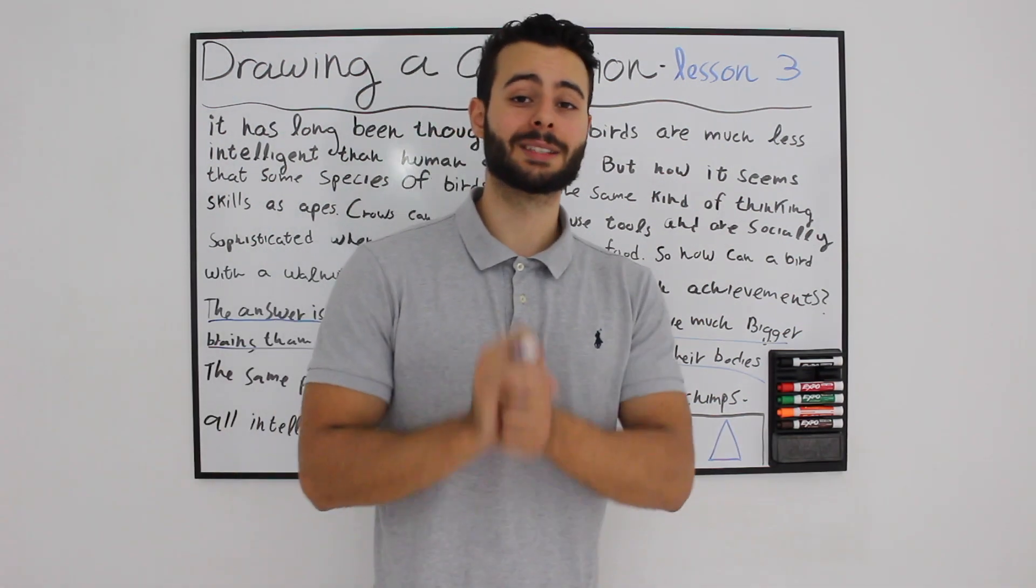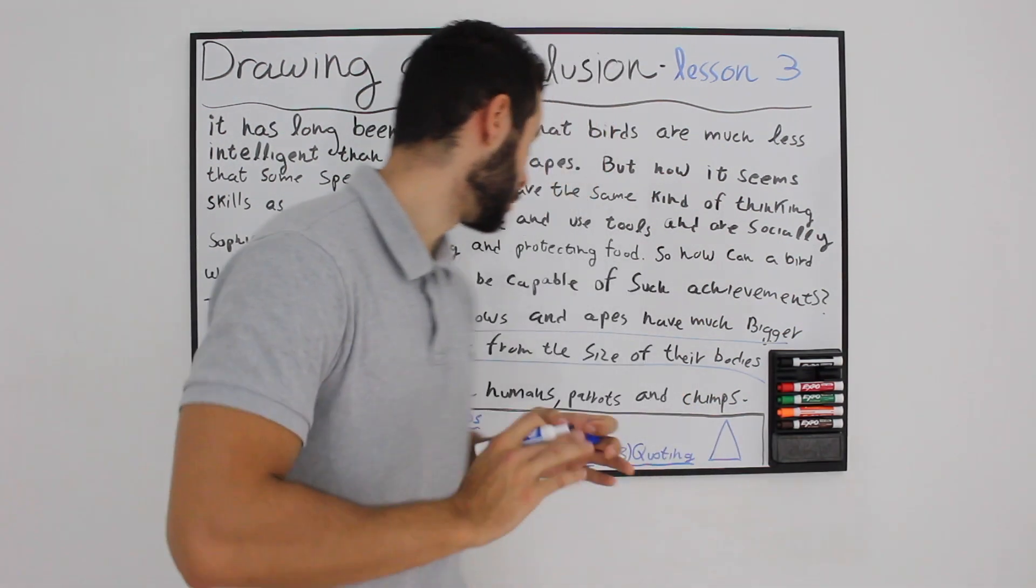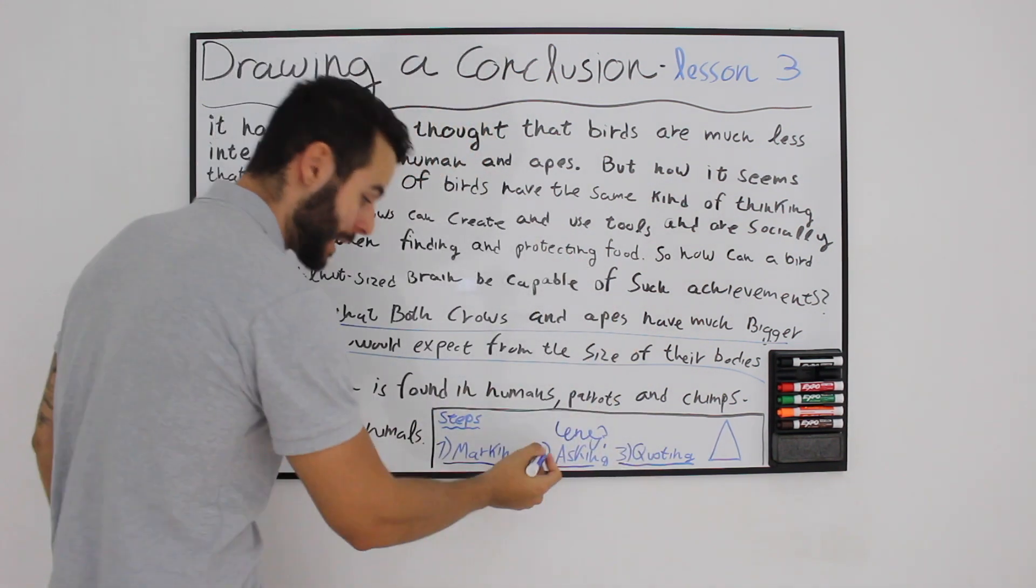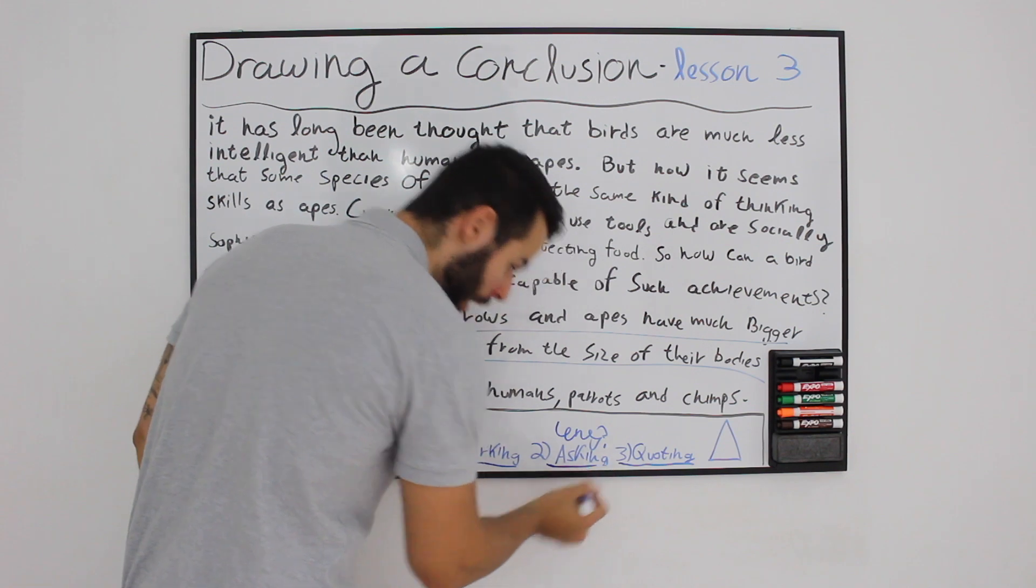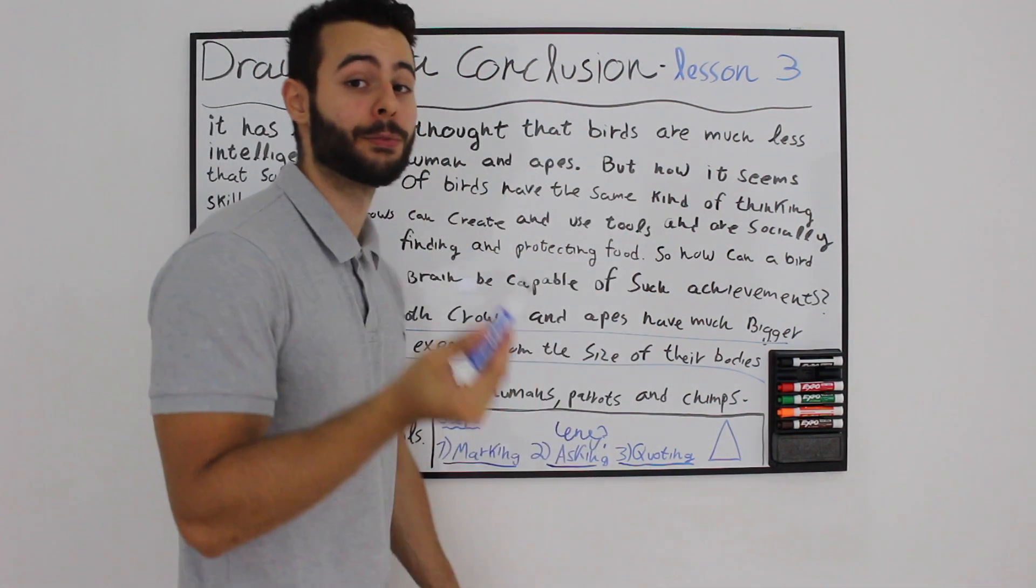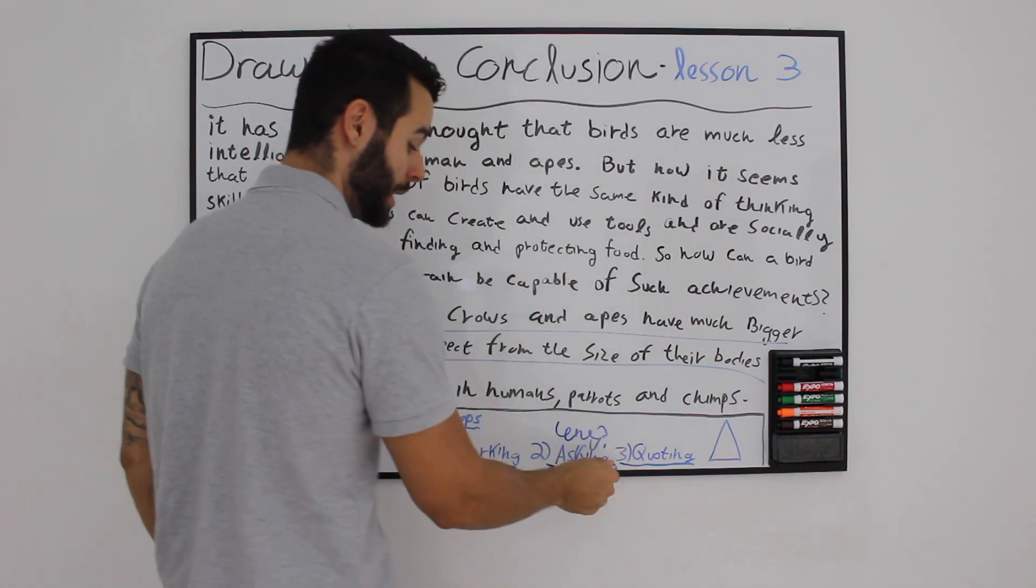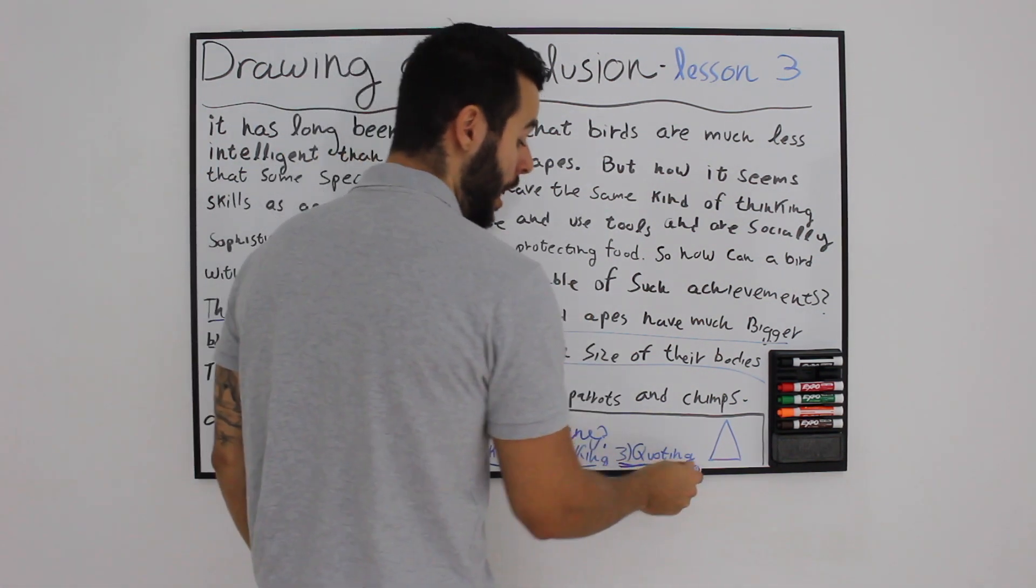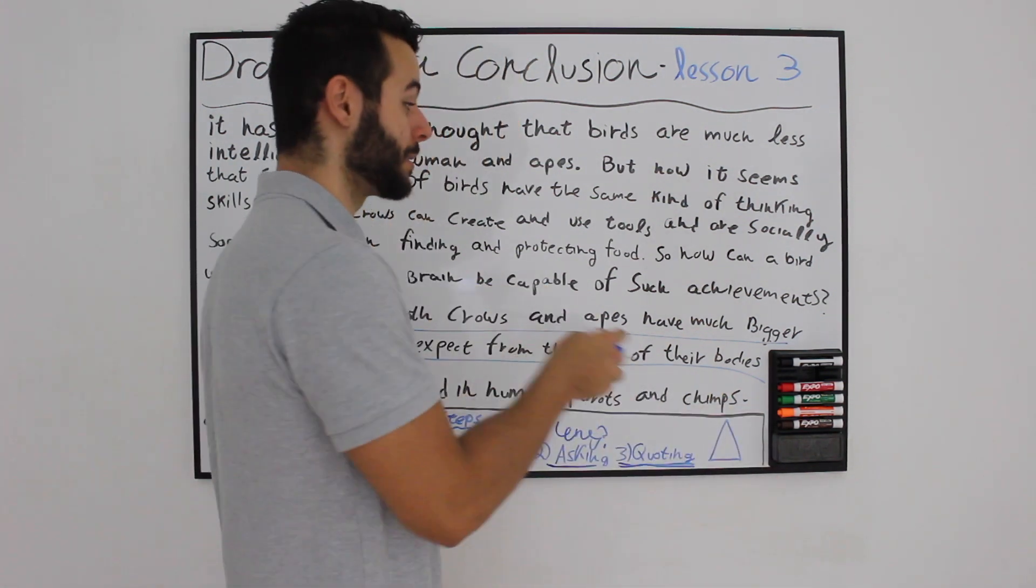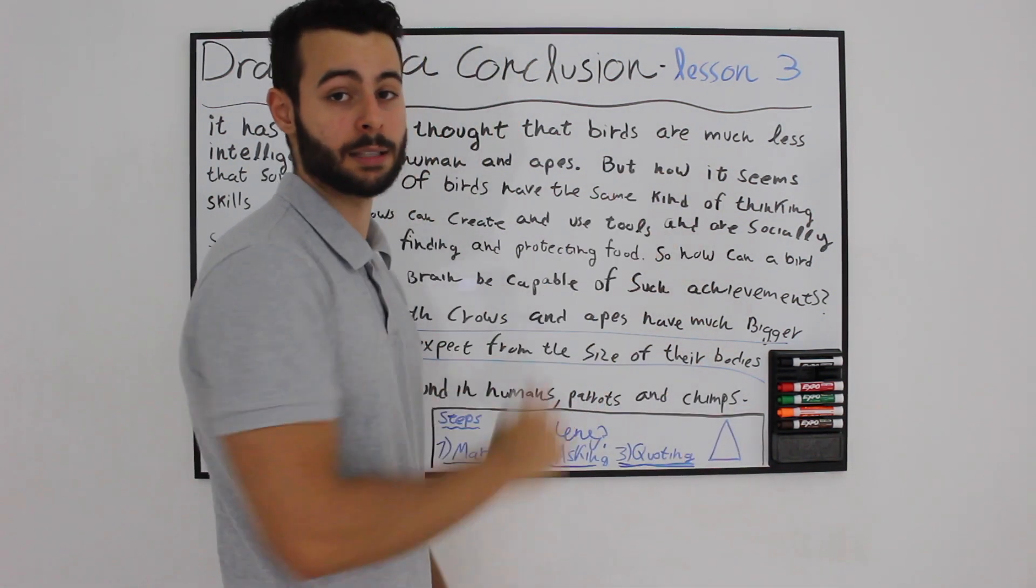Now we are going to use the second step, which is something you are going to use for each and every type of critical thinking questions, is asking yourself why. This time we are not going to just ask ourselves why, we are going to actually quote it from inside the text, because unlike an assumption, it's going to be based on a line inside the paragraph.